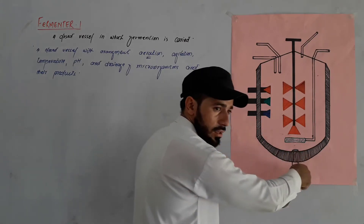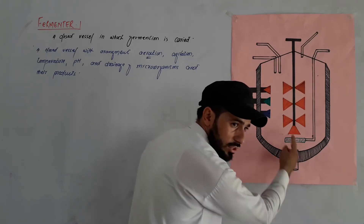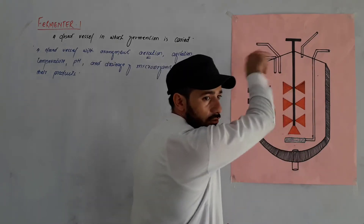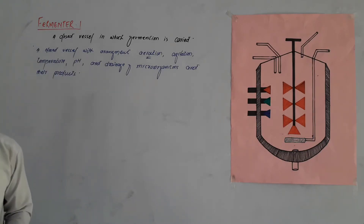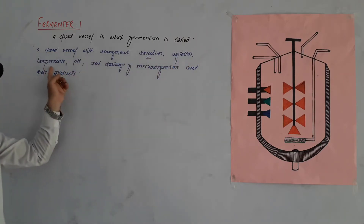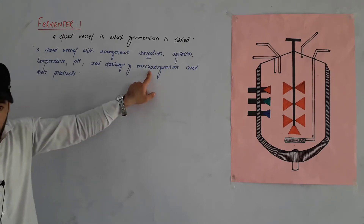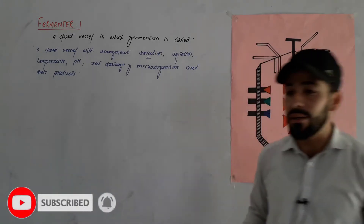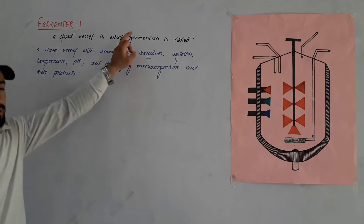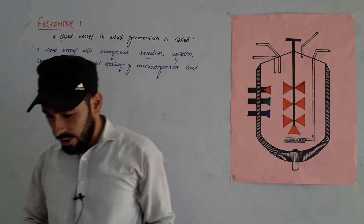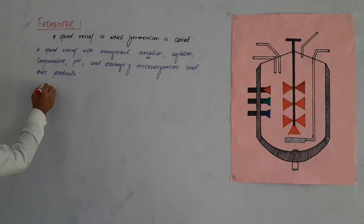Once the product is ready inside the fermenter, it is collected and taken out. The vessel is then cleaned and restarted. So to summarize: a fermenter is a closed vessel with arrangements for aeration, agitation, temperature, pH, and drainage of microorganisms and their products. The closed vessel used for fermentation is called a fermenter.